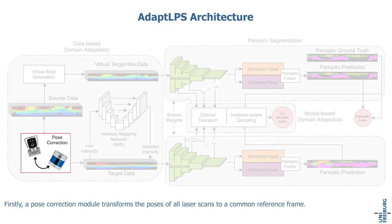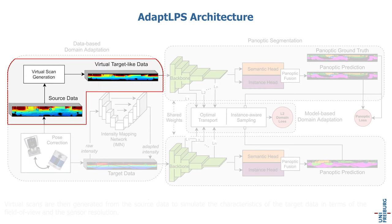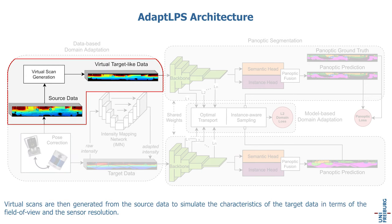Firstly, a pose correction module transforms the poses of all laser scans to a common reference frame. Virtual scans are then generated from the source data to simulate the characteristics of the target data in terms of field of view and sensor resolution.